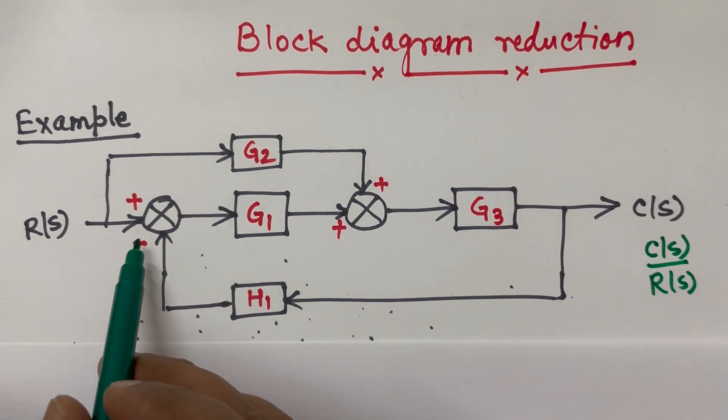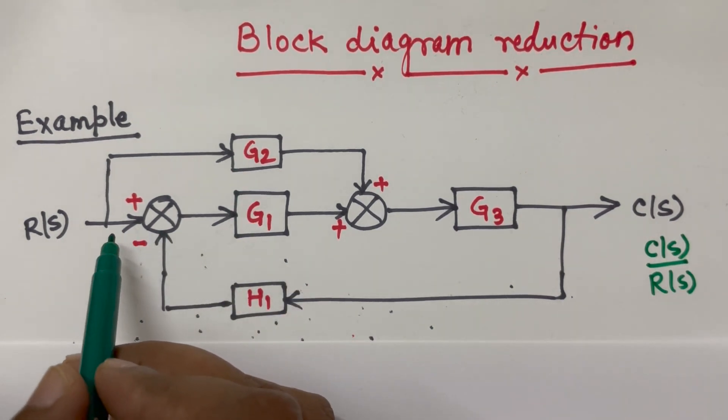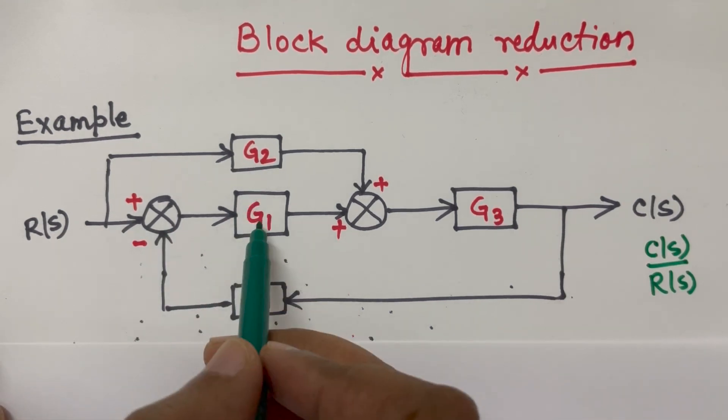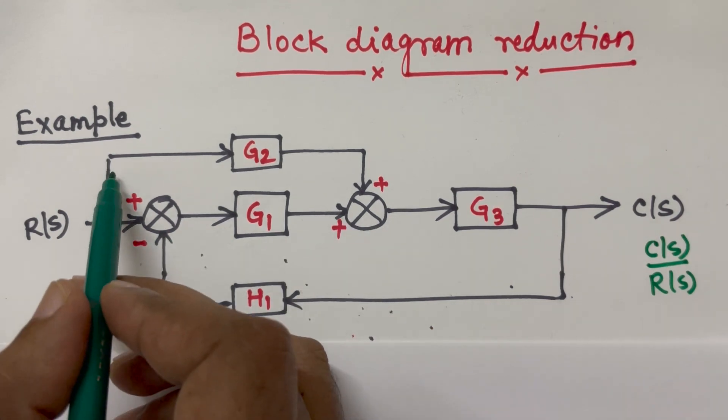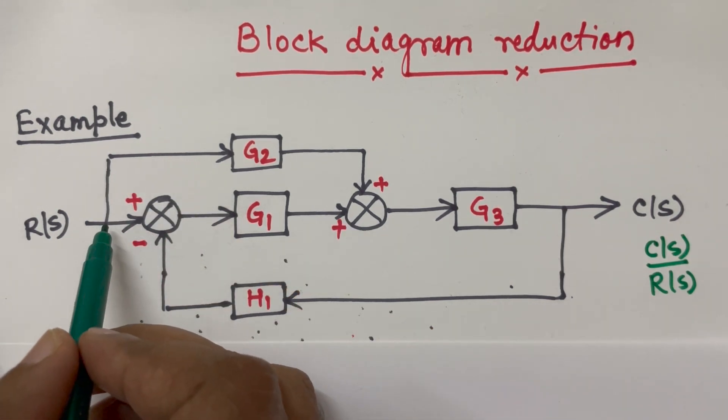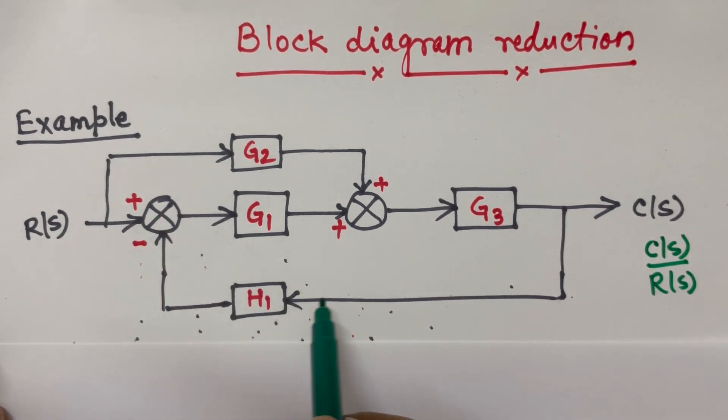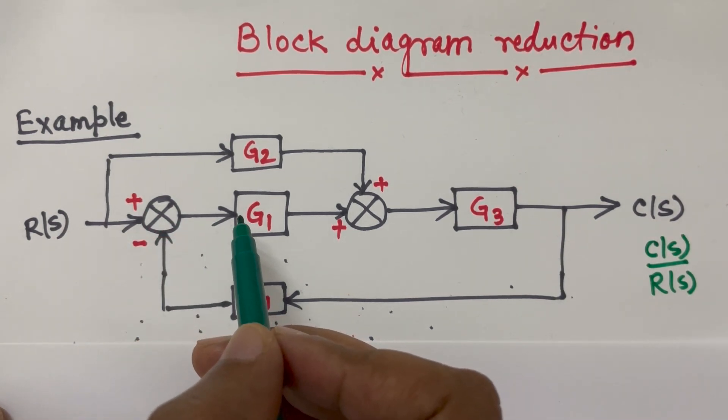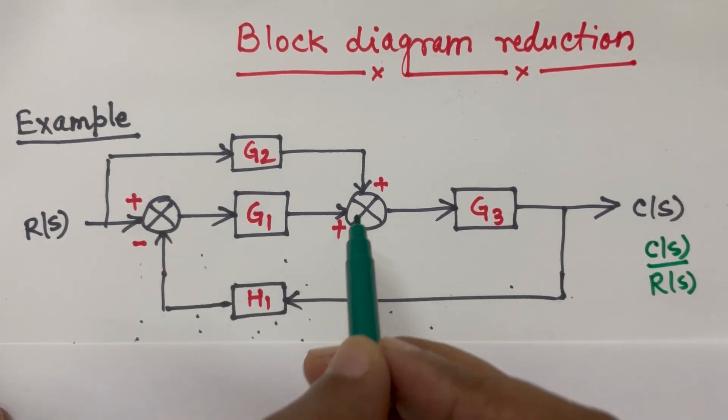Now here we can see G1 and G2 - we have a problem here. Both G1 and G2 are meeting at the same point but not starting from the same point. Basically G2 starts from R and G1 starts from this feedback, so after this feedback G1 starts.